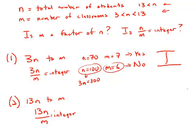Well, there's only two possibilities here. There's either the possibility that m goes evenly into n—so 13 times n over m is an integer—or the possibility that it goes evenly into 13. But the trouble is, 13 is a prime number. It has no factors other than itself and one.